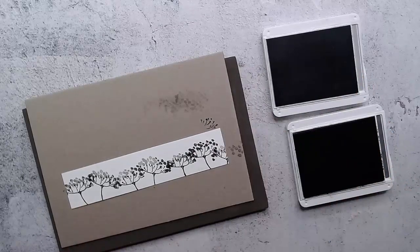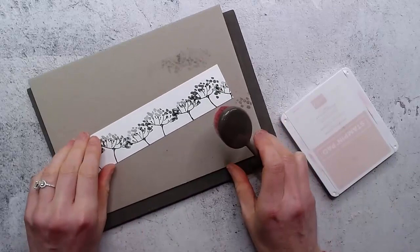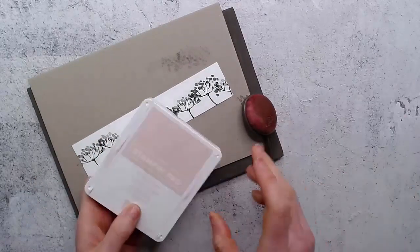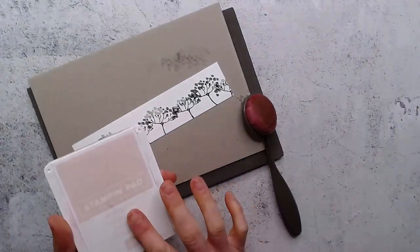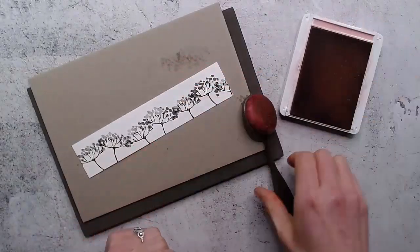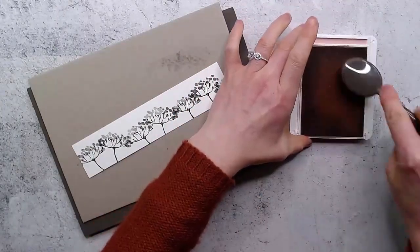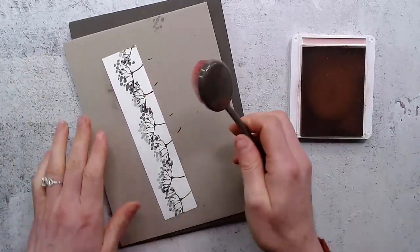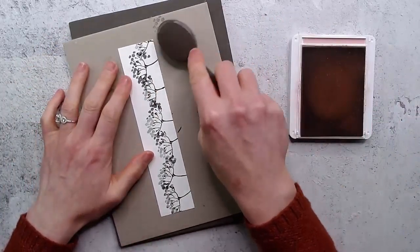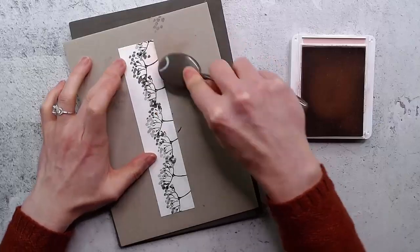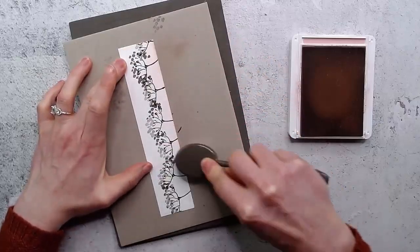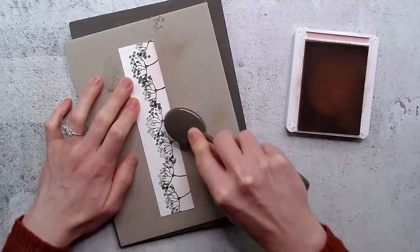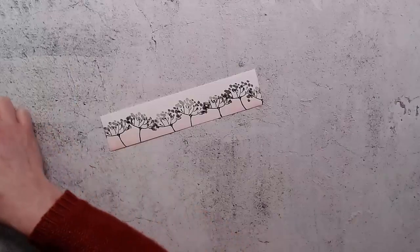Then from there I want to take blushing bride. When you're using grays and blacks you could use any color, but I wanted to use the new blushing bride ribbon. I'm going to use a blending brush, and just start on your scrap paper and then blend some of that color up into your flowers.